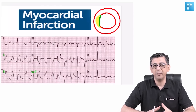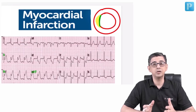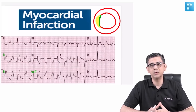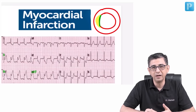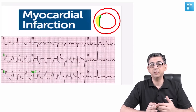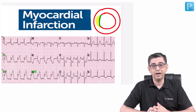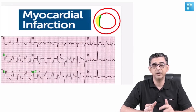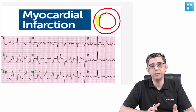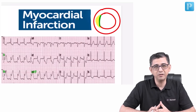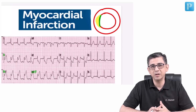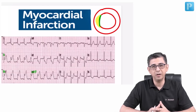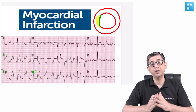Let's understand what MI is about and why this topic is important. Coronary artery disease contributes to the maximum mortality in India. India is the diabetes capital of the world, and the number one reason diabetics die is cardiovascular causes — ranging from ST elevation to non-ST elevation MI to unstable angina. If not handled properly, the patient can end up with heart failure, severe pulmonary edema, and can die.